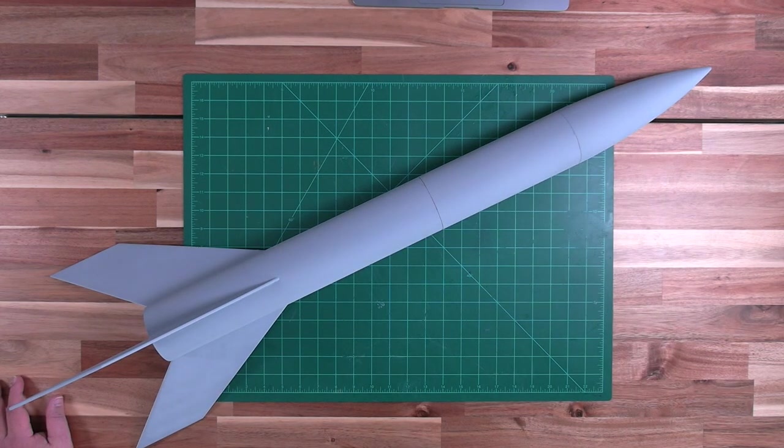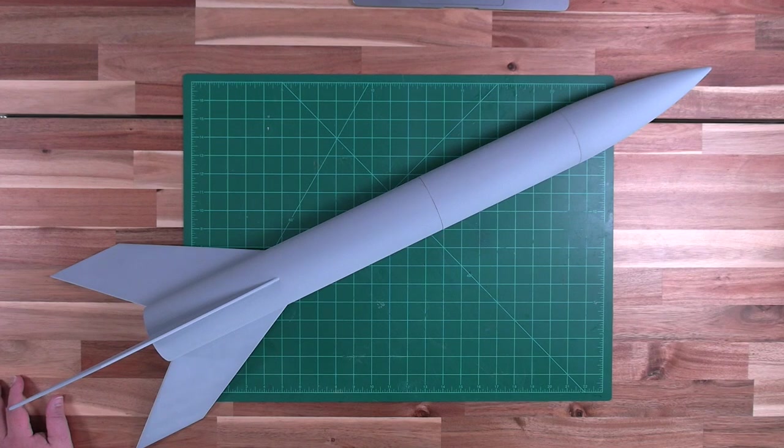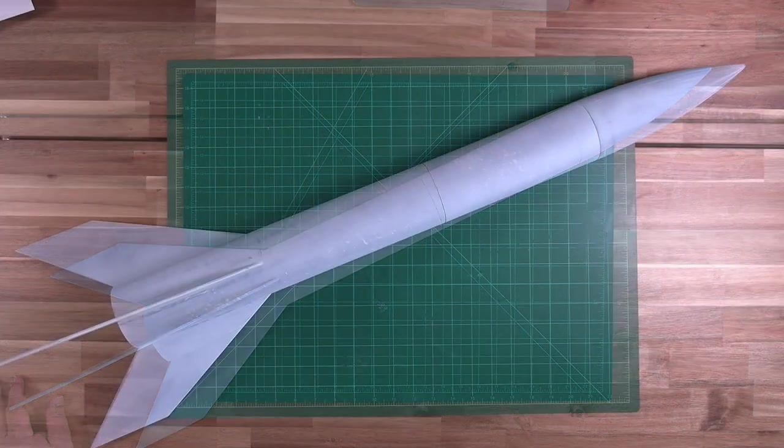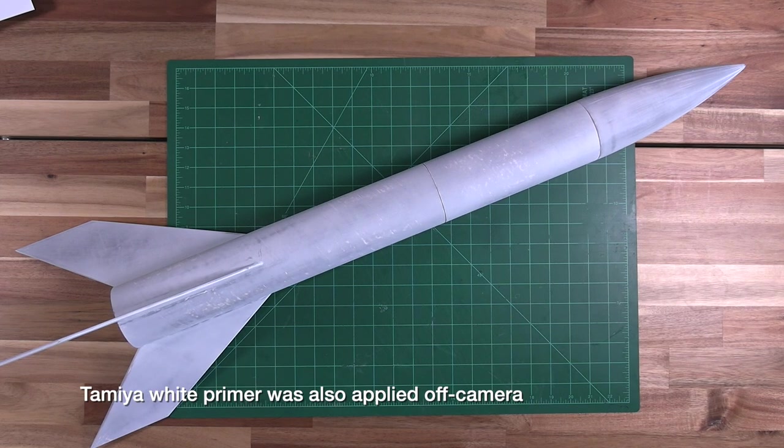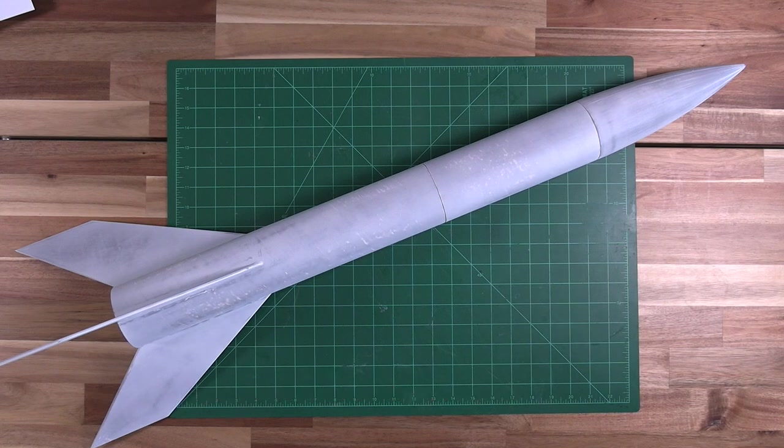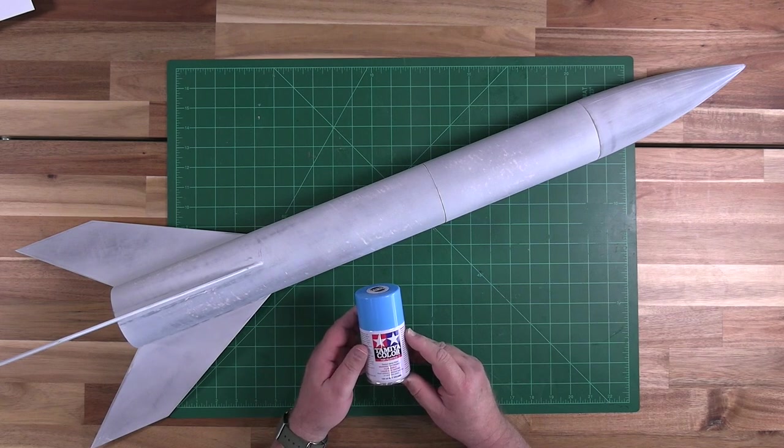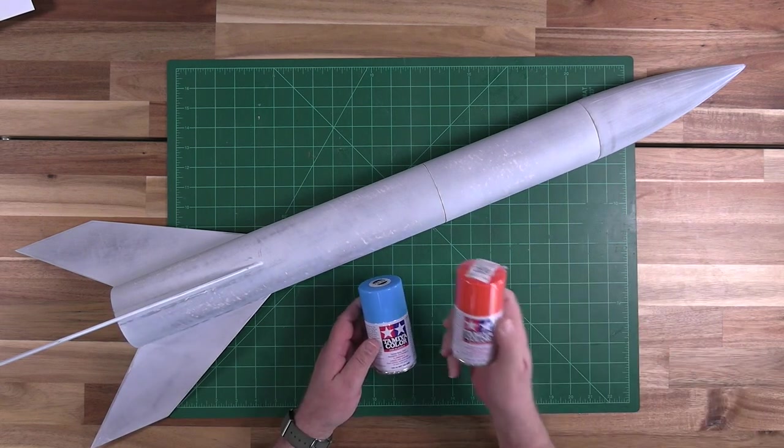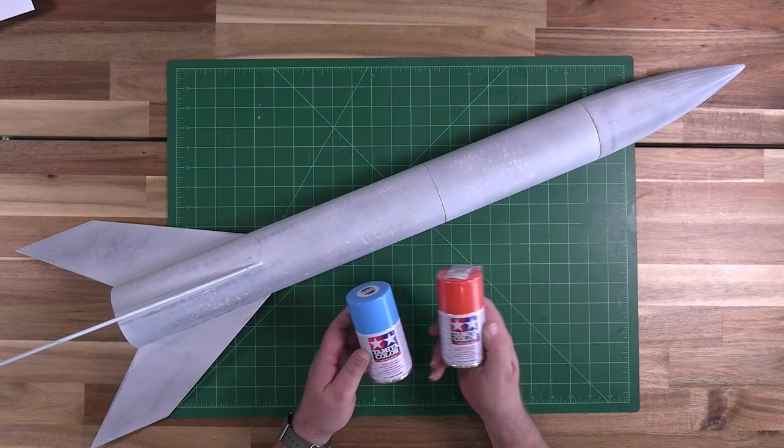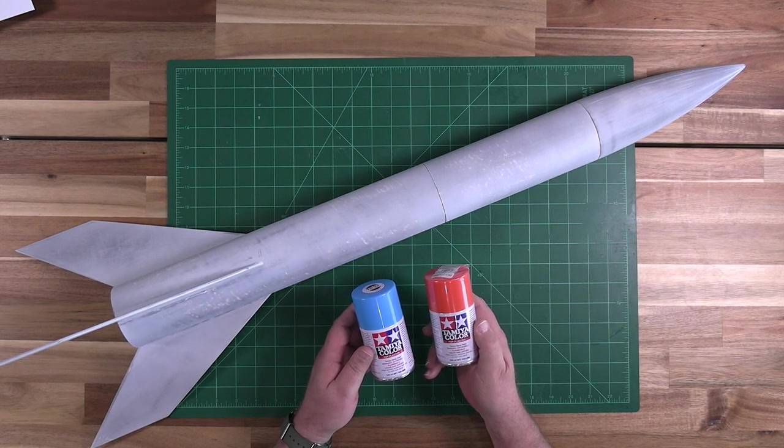The model has already been primed with Rust-Oleum Auto Primer and I'm about to step outside off camera to sand it down. Let's talk about the paint job for our Alpha. Now this will be a much simpler paint job than what we just did for the Spitfire but it will be no less dramatic. Our first step will be to paint the upper surfaces with a light blue color. We'll then put some masking in place and spray the lower surfaces with a bright orange. Very simple. Let's get started.